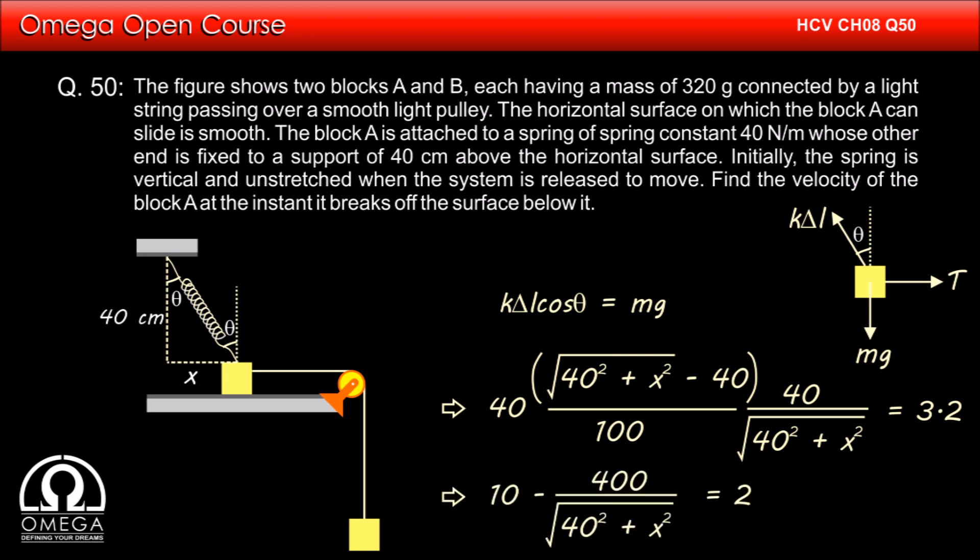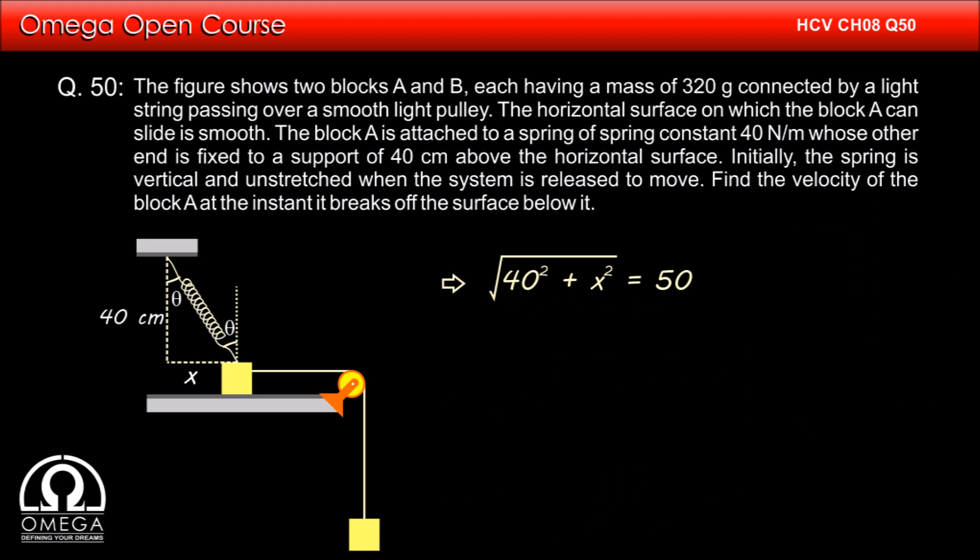Simplifying, we get 10 minus 400 by square root of 40 square plus x square is equal to 2 which implies root under 40 square plus x square is equal to 50 or 40 square plus x square is equal to 50 square. This implies x square is equal to 50 square minus 40 square or x is equal to 30 centimeter.